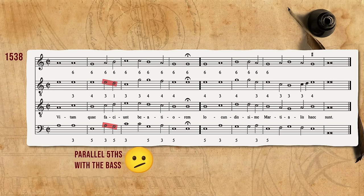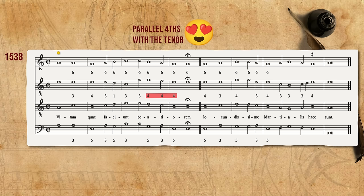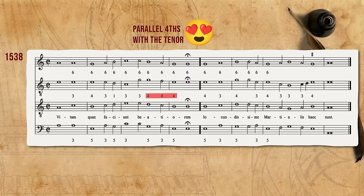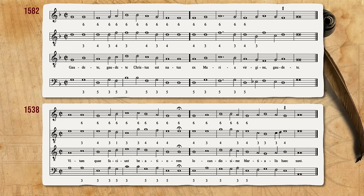Apart from making parallel fifths with the bass, which are most likely an unintended error, the alto line in this setting also makes parallel fourths with the melody. This gives a beautiful color that might have been considered old-fashioned by the time of the 1582 version. It is not clear, therefore, whether the later version simply copied the older version, transposed it, and corrected and updated its alto line, or whether, in both cases, the creators followed the same technique when harmonizing the same melody, and thus ended up with very similar results. Both options seem possible.